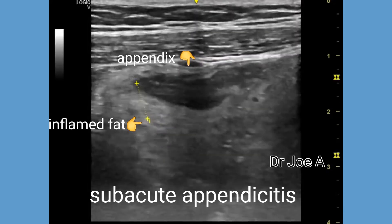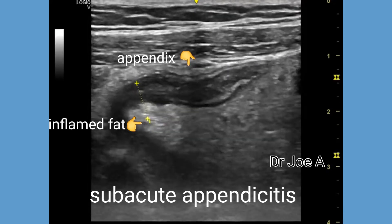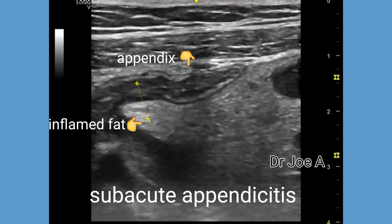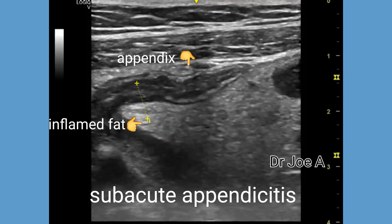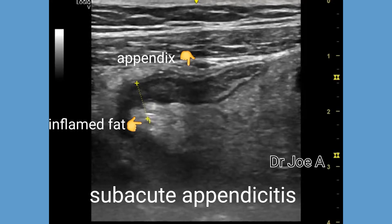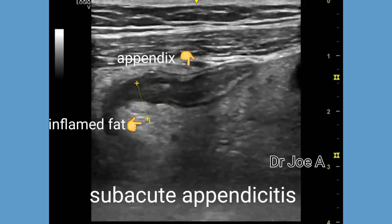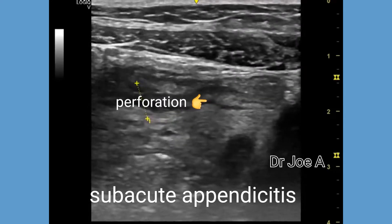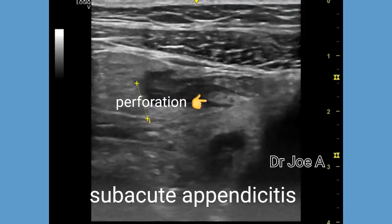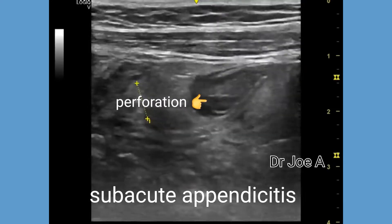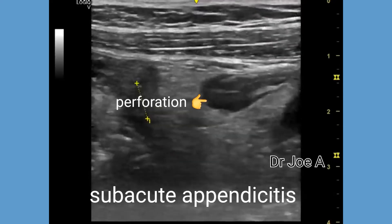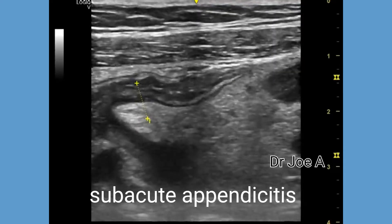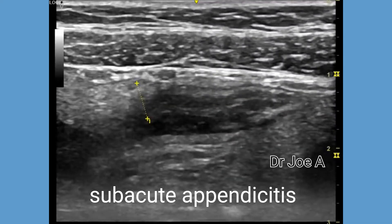Observe the inflamed fat posterior to the appendix, seen as echogenic tissue. There is also possible evidence of perforation of the appendix with leakage of fluid into the cavity, with surrounding echogenic fat which appears inflamed.